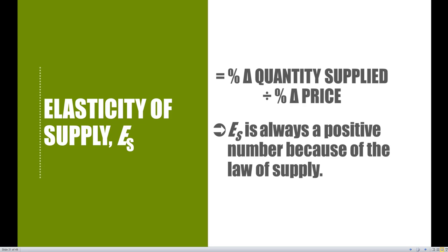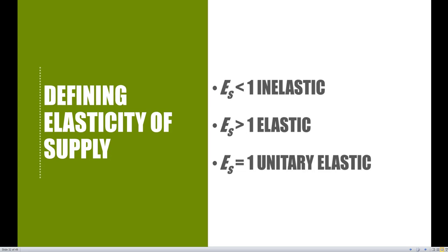You may be wondering what these specific numbers mean. Thankfully, we have the same intuition from the demand side applied here. There are three different values ES can take: less than one, indicating the good is inelastic — suppliers are very price insensitive and a large price change won't change quantity supplied much; greater than one, meaning an elastic good where suppliers are very price sensitive and a small price change leads to a large change in quantity supplied; and ES exactly equal to one, which is unitary elastic, where the percentage change in quantity supplied is exactly matched by the percentage change in price.